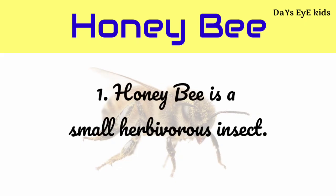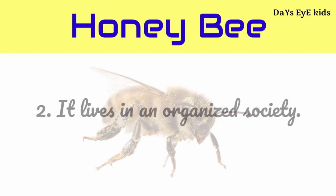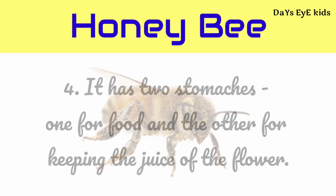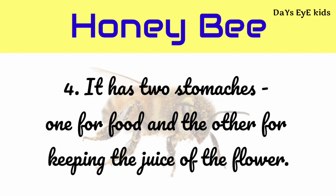Honeybee is a small herbivorous insect. It lives in an organized society. It has three small eyes, two pairs of wings, and six legs. It has two stomachs — one for food and the other for keeping the juice of the flower.